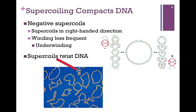We have an electron micrograph at the lower portion of the screen illustrating the difference between uncoiled and supercoiled DNA. The unwound DNA molecule is a closed circular piece of DNA with very open, large dimensions. When we supercoil it — wrapping the coils on top of one another, as shown at our red arrow — it becomes highly supercoiled, making it a smaller molecule. This is the first level of packing the DNA to fit within the nucleus.